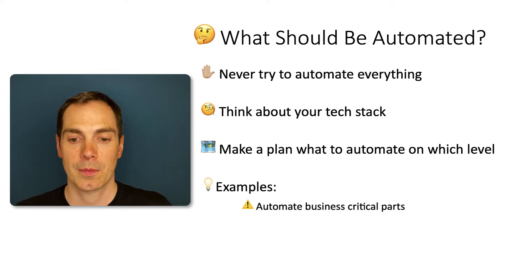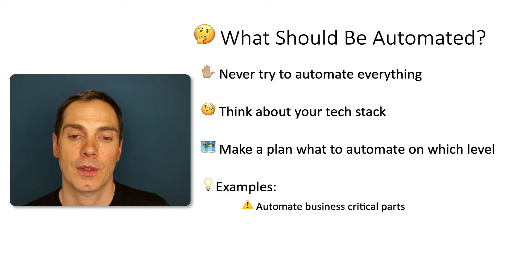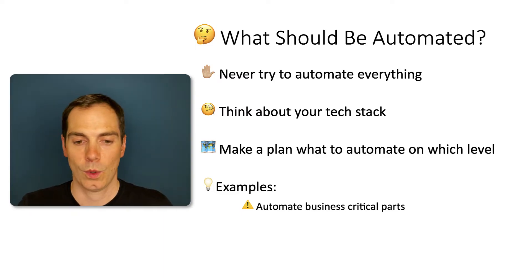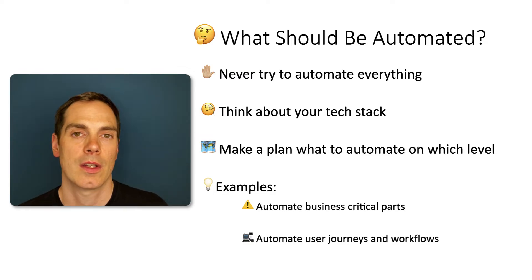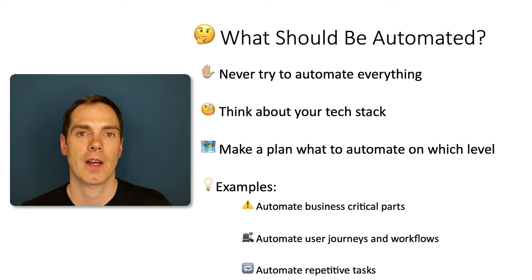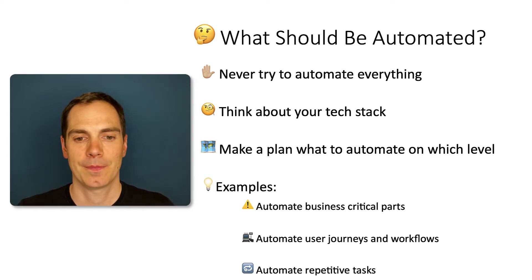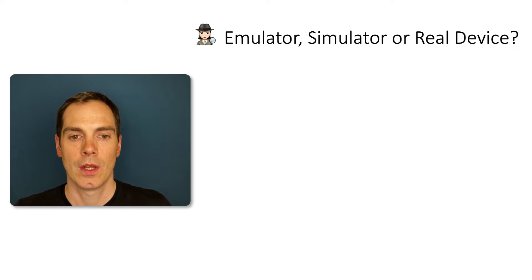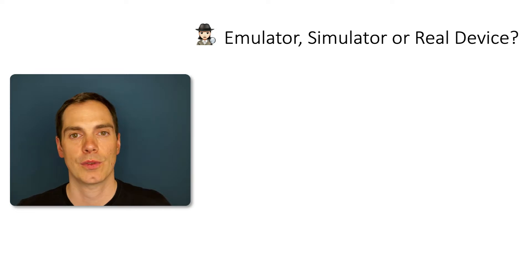Here are some examples of what to automate: automate business-critical parts, automate user journeys and workflows — depending on your project this can be a great starting point — or automate repetitive tasks to free up your time for real testing activities. These are just some examples. You should also ask yourself where you'd like to execute the tests and on which devices, because this also influences the tool selection.